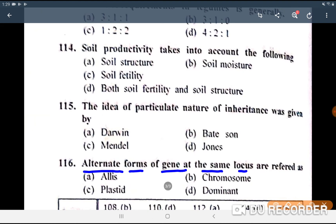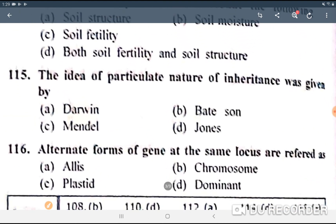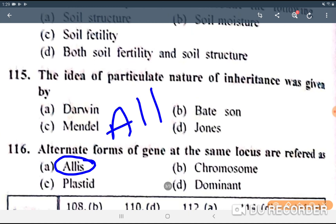Next question: alternate forms of a gene at the same locus are referred to as? The answer is alleles. Note that the correct spelling is A-L-L-E-L-E-S — alleles.